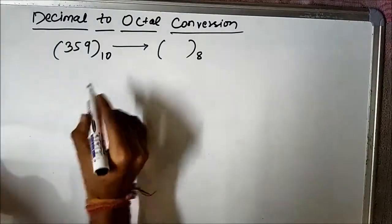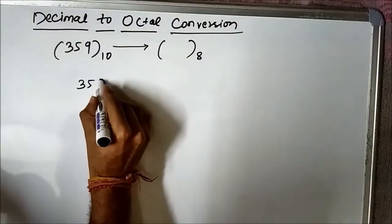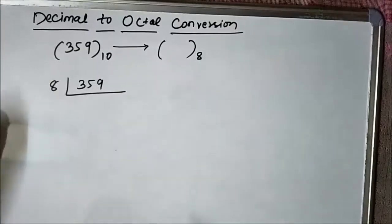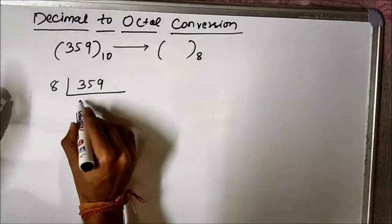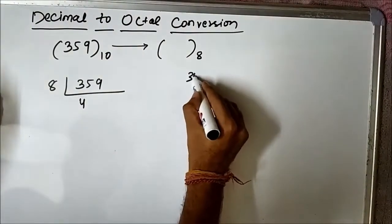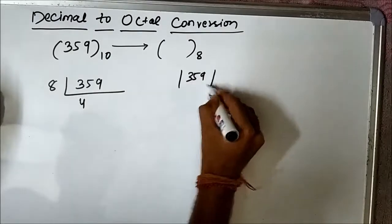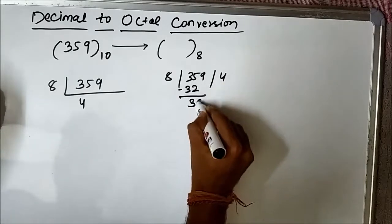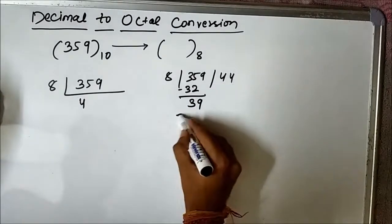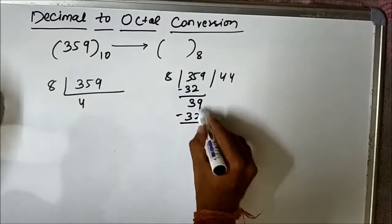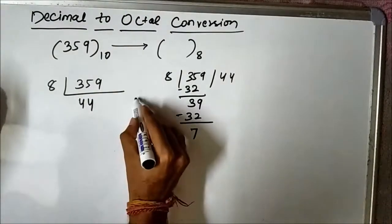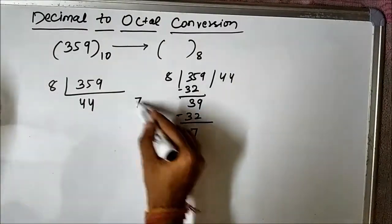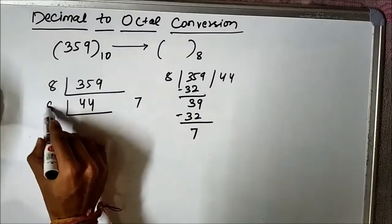We will divide 359 by 8. 8 into 44 is 352, so 359 divided by 8 gives quotient 44 and remainder 7. This 44 is the quotient and 7 is the remainder. Again we will divide 44 by 8.